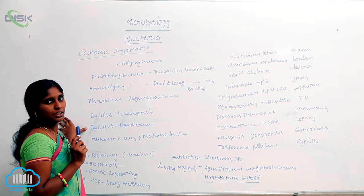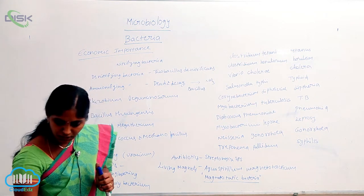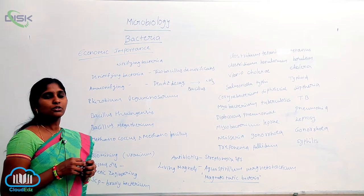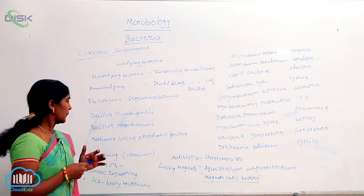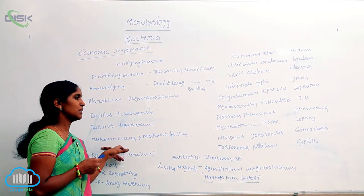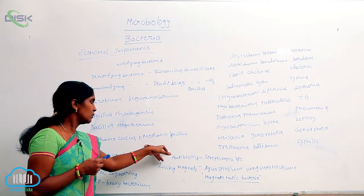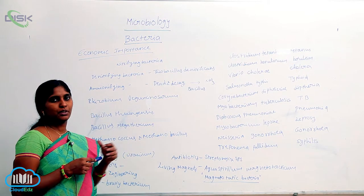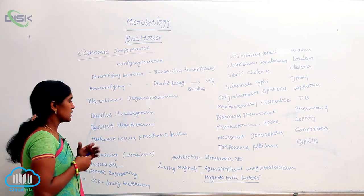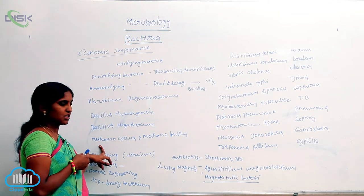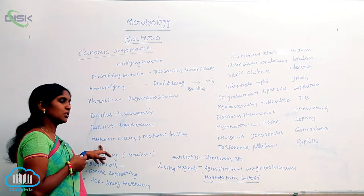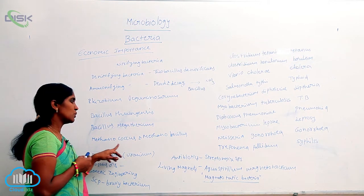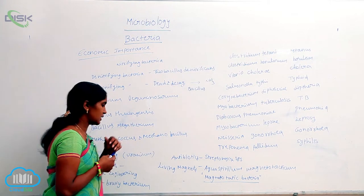Bacillus megatherium is used industrially for the tanning of tobacco. For gas production — specifically biogas and methane production — two microorganisms are used: Methanococcus and Methanobacillus.